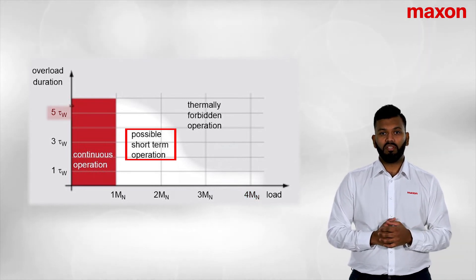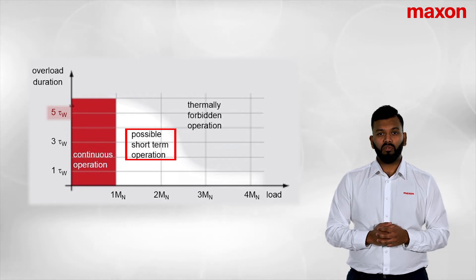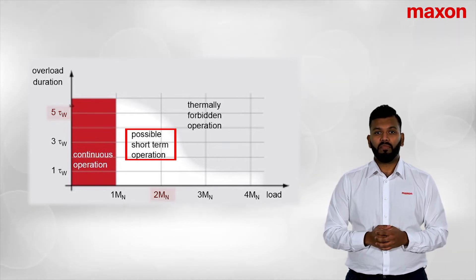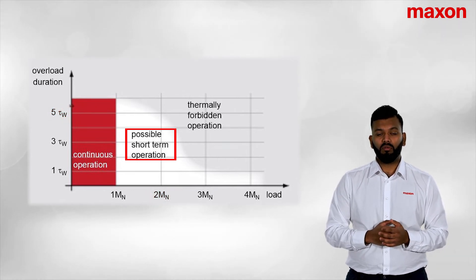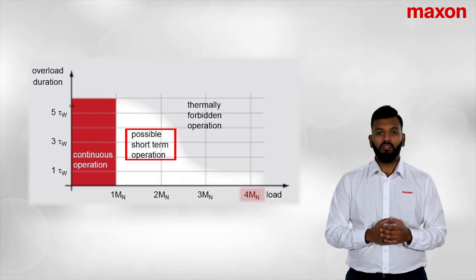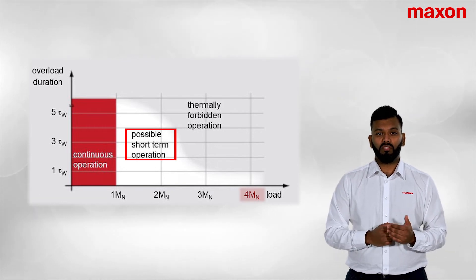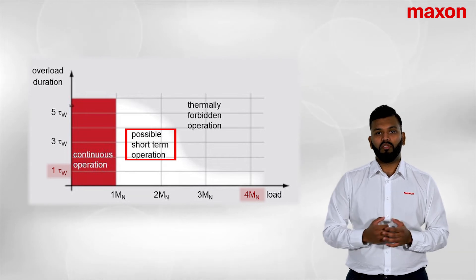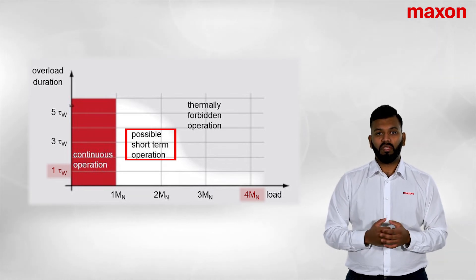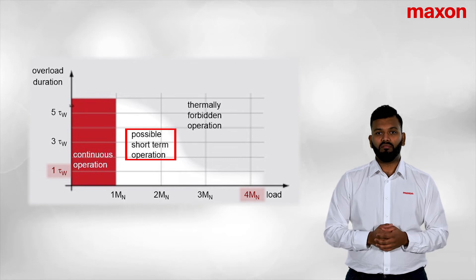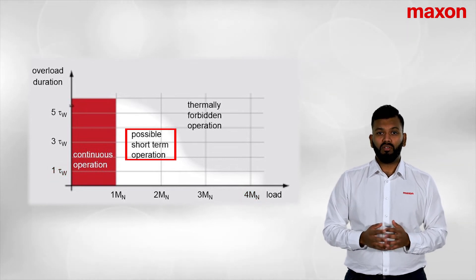If you go to five times the thermal time constant, you can only run the motor to maybe double the torque limit. But if you want to push the torque up to four times the torque limit, you'll be restricted in the time you can push it — just under one times the thermal time constant. In some cases it might be half, or even just seconds that you can run.